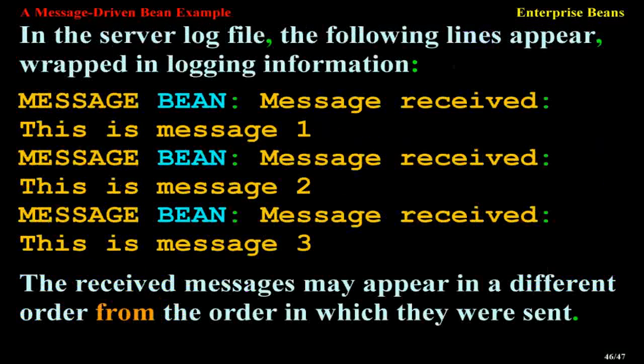In the server log file, the following lines appear, wrapped in logging information: 'Message Bean: Message Received: This is message 1', 'Message Bean: Message Received: This is message 2', 'Message Bean: Message Received: This is message 3'. The received messages may appear in a different order from the order in which they were sent.